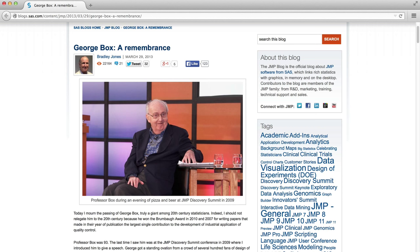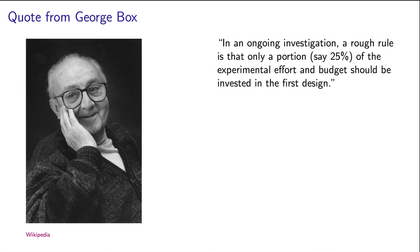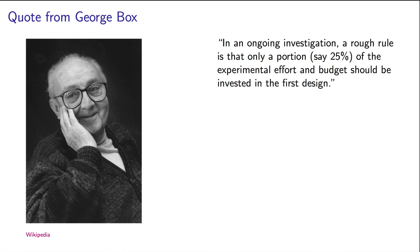George Box, the famous statistician from whose textbook we are using this example, said it's a rough rule that only a portion, about 25% of the experimental effort and budget, should be invested in the first experimental designs. I paraphrase that slightly, but basically he is saying that you should leave some money and time for later on to figure out the details. In the beginning, you don't even know yet if A, B or C are actually significant. First figure that out before you go build a detailed model with two level and three level interactions.